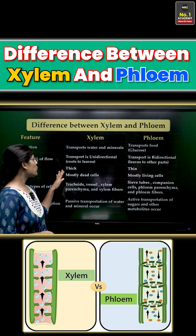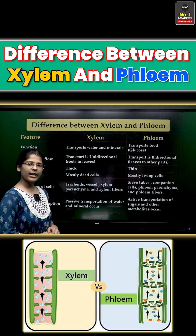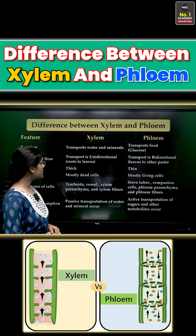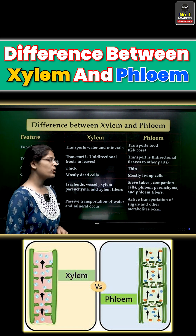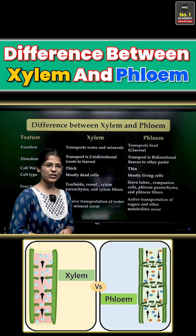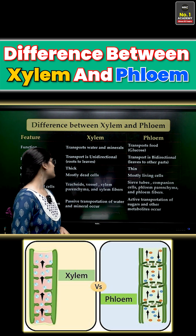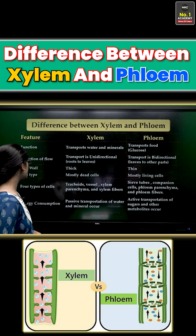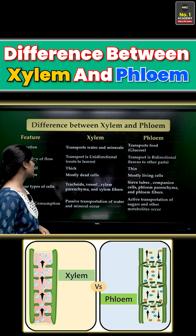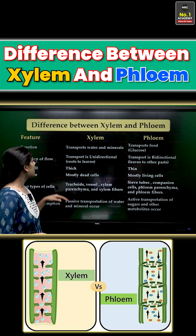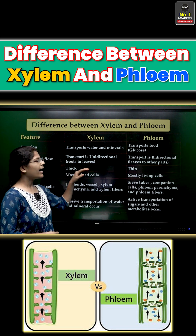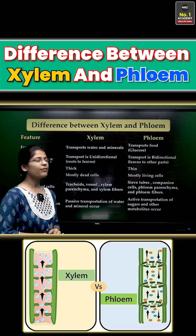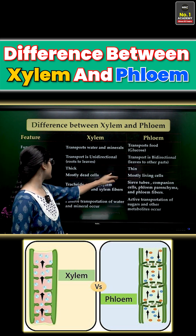The second point: transport is unidirectional in xylem, and transport is bidirectional in phloem. The third point is cell wall — the cell wall of xylem is thick, and the cell wall of phloem is thin.